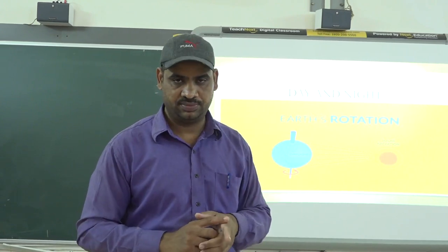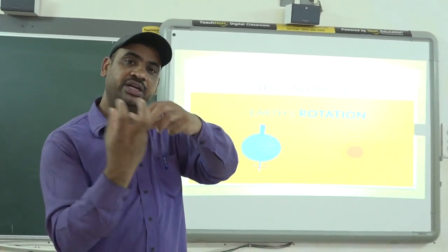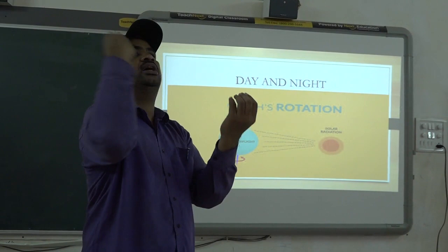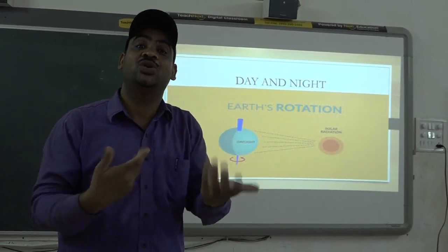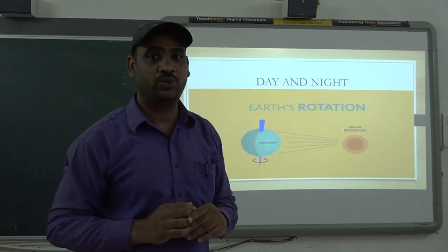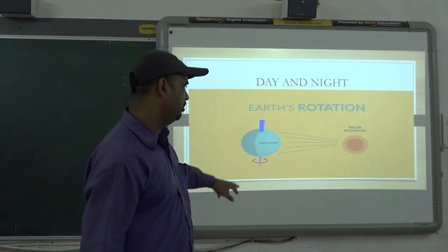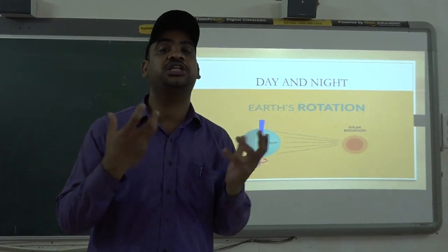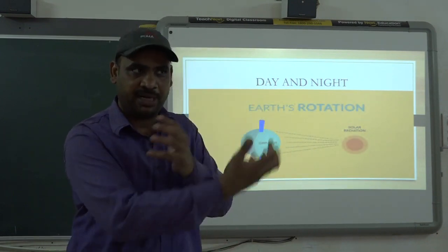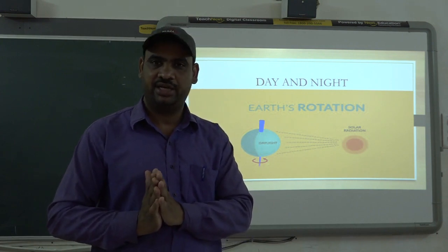There is one more concept called revolution. As the earth is moving around its own axis, it is also moving around the sun. The sun is at the center and the earth moves around it — that is called revolution. It takes 365 days, sometimes 366 days, which we call one year. But what is important for this lesson is that day and night are caused by the rotation of the earth.